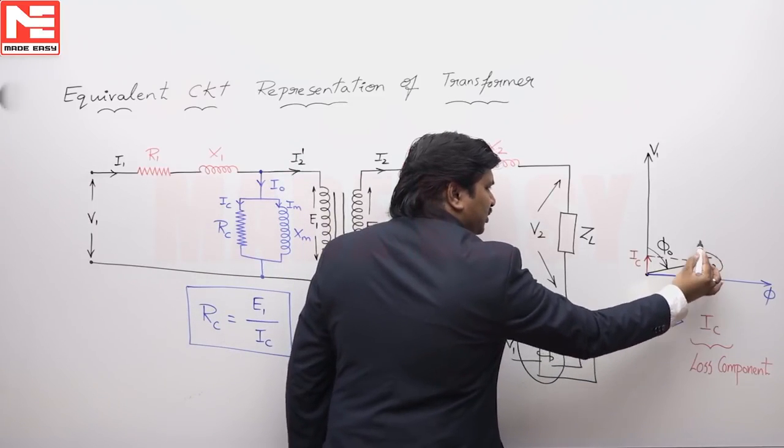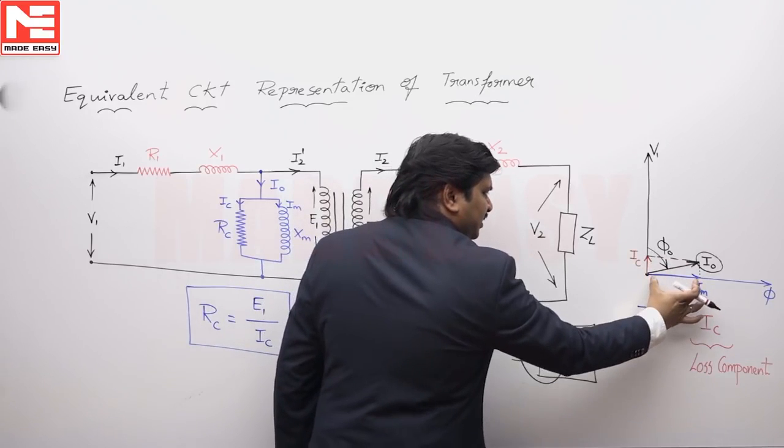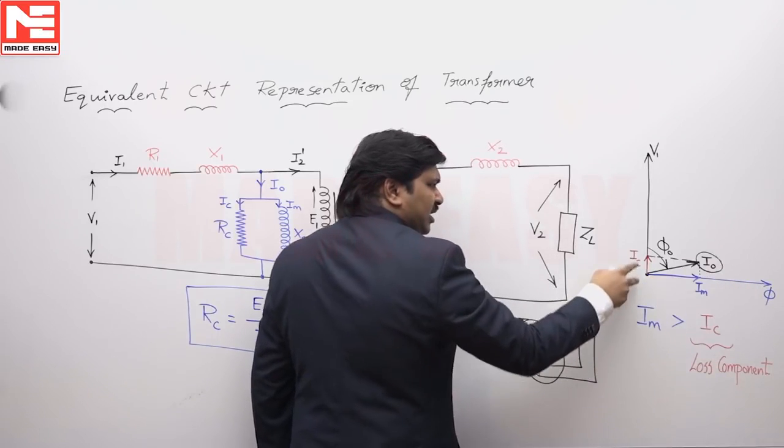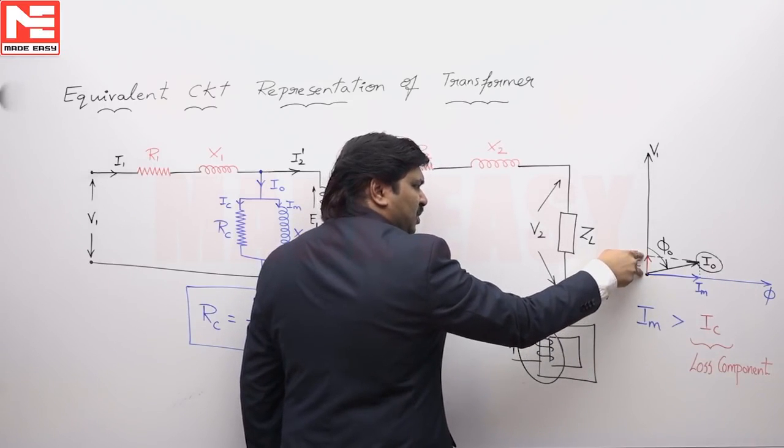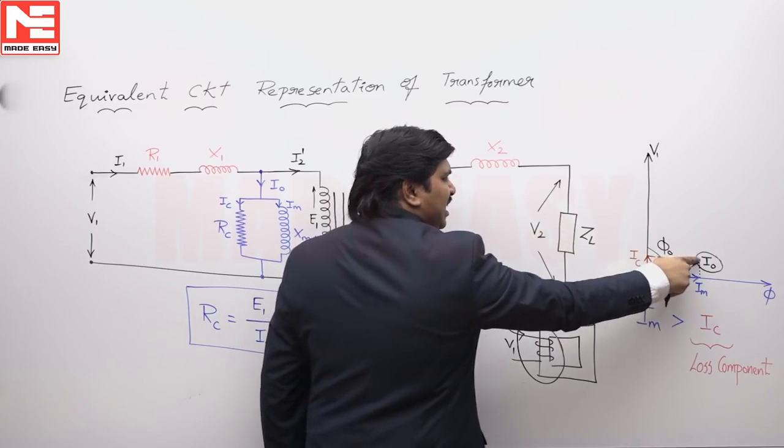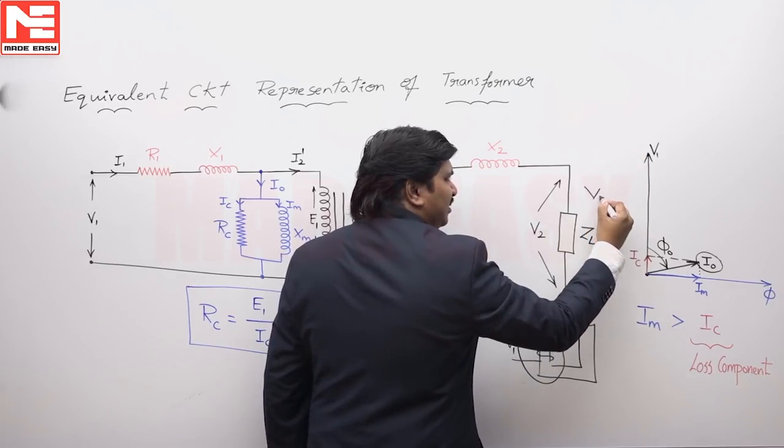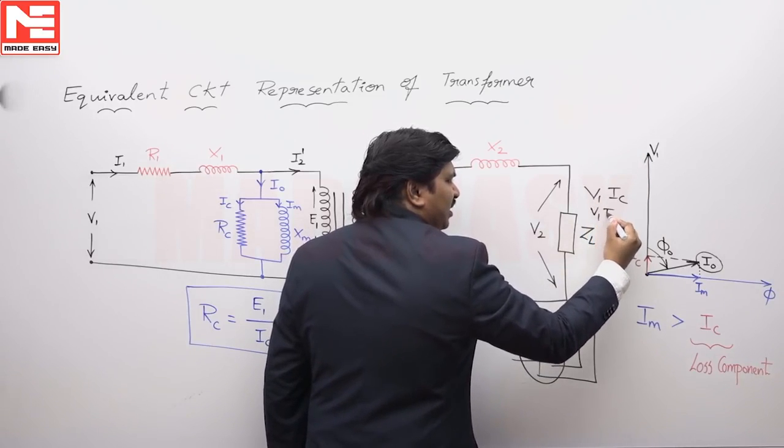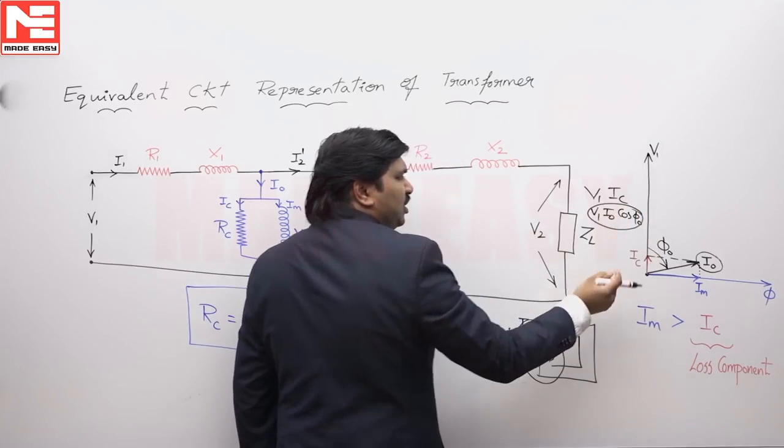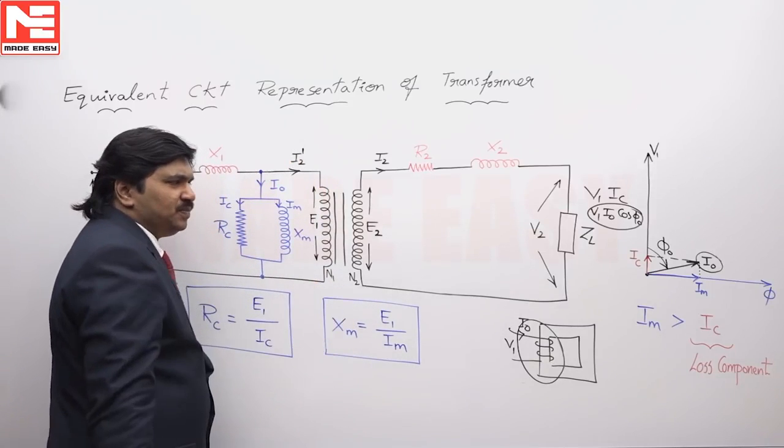This current has two components, one is in phase, other one is out of phase with V. This current's purpose is to produce flux in the core. This current's purpose is to supply losses. V1 into I_C, I_C is I naught cos phi naught. V I_C is nothing but V1, I naught cos phi naught. This is a watt component, loss component, which is very small value.